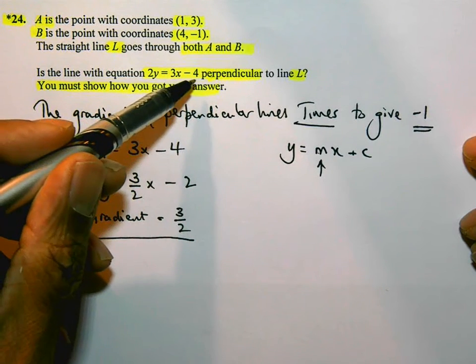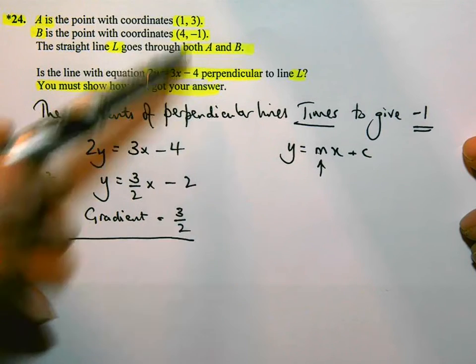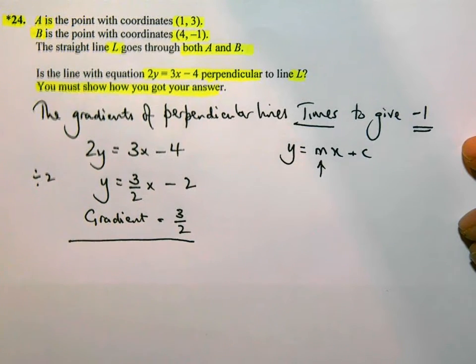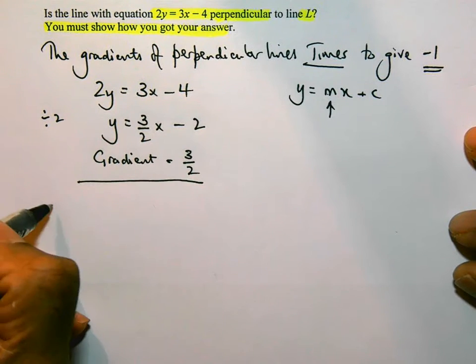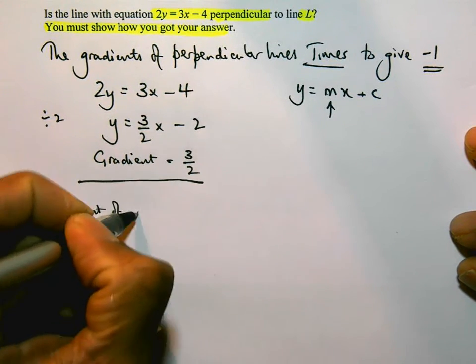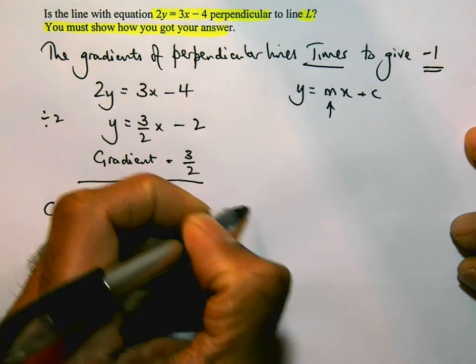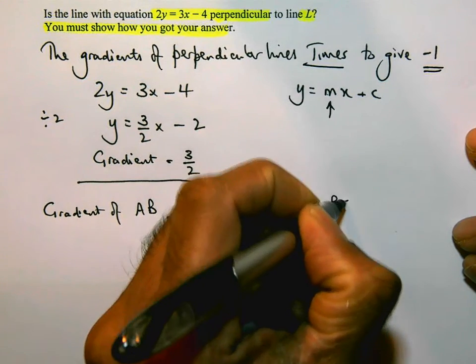Now I need to work out the gradient of the line joining those two points, the points A and B. So gradient of AB. I know A is (1, 3). I know B is (4, -1).